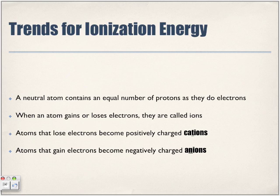Trends for ionization energy. A neutral atom contains an equal number of protons as they do electrons. Lithium has three protons and three electrons. Beryllium has four protons and four electrons.